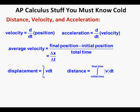Distance, velocity, and acceleration: velocity is d/dt of the position. Acceleration is d/dt of velocity, or the second derivative of position. The average velocity equals the final position minus the initial position over the total time, or delta x over delta t. The displacement is the integral from t₀ to t_f of v dt. The distance is the integral from the initial time to the final time of the absolute value of v dt.